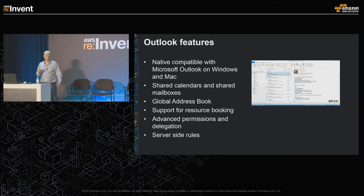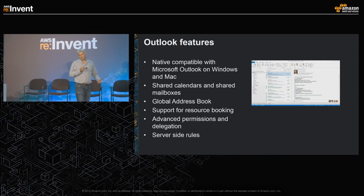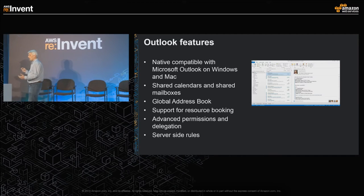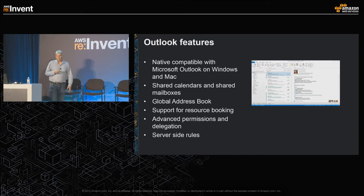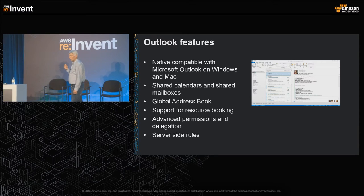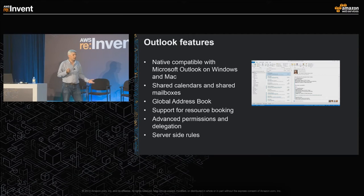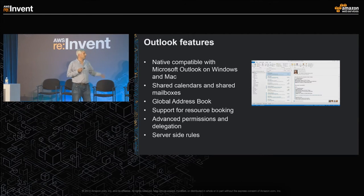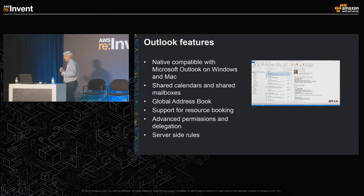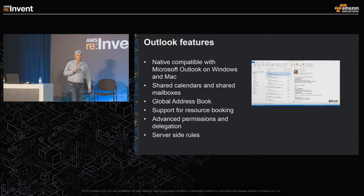We've built native integration with Outlook on Windows and Mac OS, giving you a native experience without needing to install any additional software. You just set up your organization, launch Outlook, connect it to WorkMail, and you're ready. We support a full range of features including shared calendars, shared mailboxes, a global address book, resource booking, advanced delegation schemes, and server-side filtering to help you manage your emails more effectively.